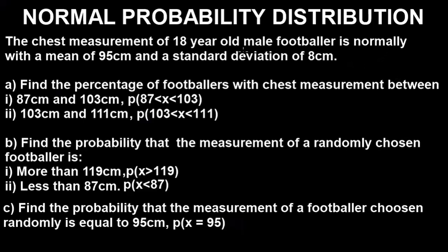The question says the chest measurements of 18-year-old male footballers are normally distributed with a mean of 95 cm and a standard deviation of 8 cm. Part A(i): find the percentage of footballers with chest measurement between 87 cm and 103 cm, written as P(87 < x < 103). Part A(ii): find the percentage with chest measurement between 103 cm and 111 cm. Part B(i): find the probability that the measurement of a randomly chosen footballer is more than 119 cm, written as P(x > 119). Part B(ii): less than 87 cm, written as P(x < 87). Part C: find the probability that the measurement of a randomly chosen footballer is equal to 95 cm, written as P(x = 95).